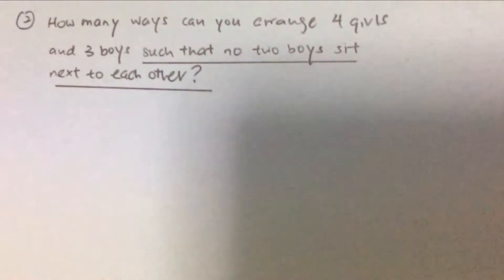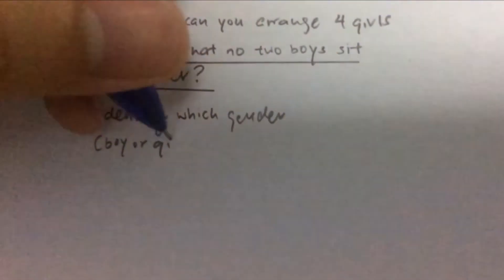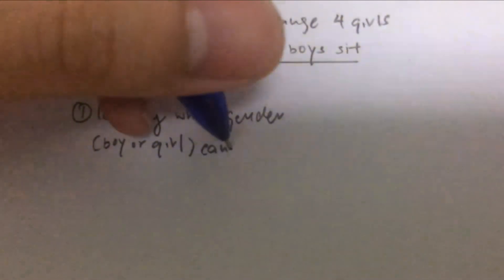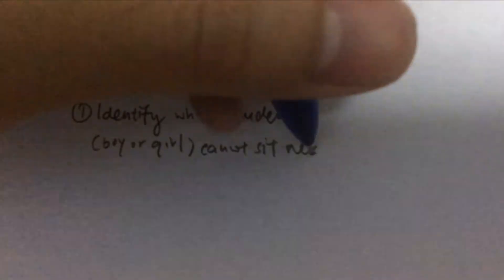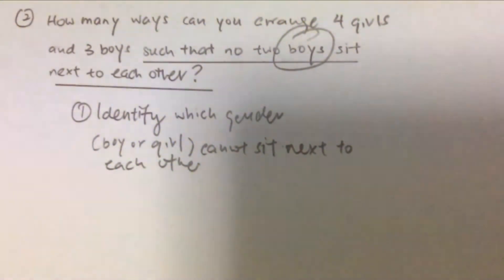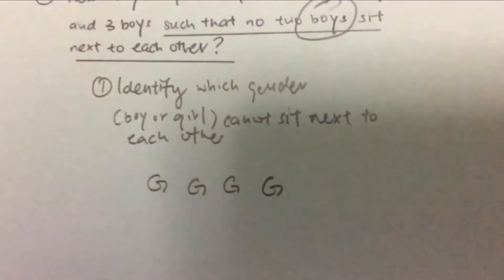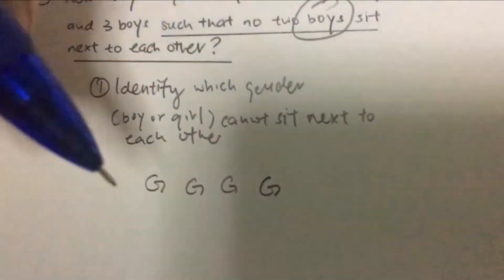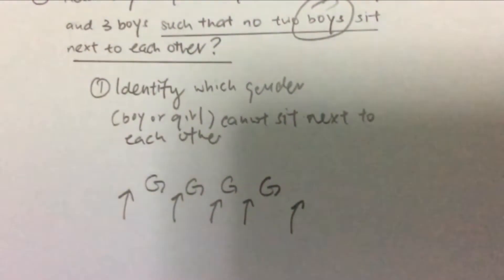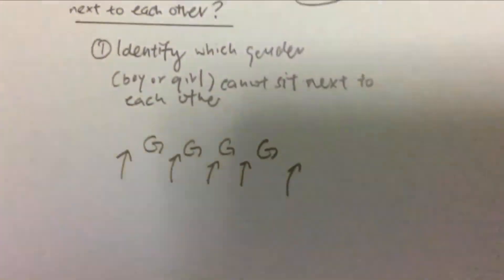The first thing you should do is identify which gender cannot sit next to each other. In this case, the boys cannot sit next to each other. So we arrange the girls first, since the girls can sit next to each other. There are four girls, and we then slot the boys within the gaps. There are five different slots available, as you can see, but note that there are only three boys.